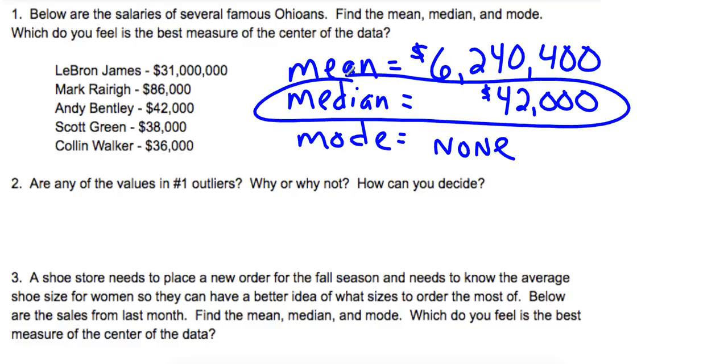Well, probably the median is the best one. I mean, you certainly wouldn't look at this and say, oh, their average salary is $6 million, because Mr. Green and Mr. Walker, they're not making anywhere close to $6 million. So that leads us to question number two. Are any of the values in number one outliers? And yeah, definitely, you would say that Mr. James is definitely an outlier. He makes way more money than everybody else. So he's kind of skewing the data. He makes this mean be way bigger than it would otherwise be.